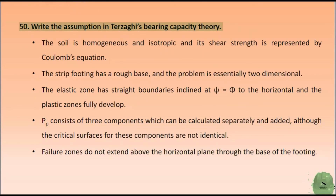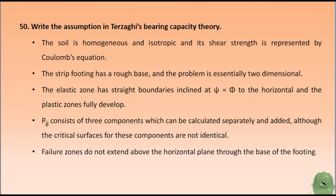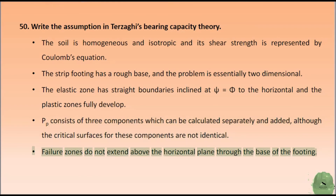Write the assumptions in Terzaghi's bearing capacity theory. The soil is homogeneous and isotropic and its shear strength is represented by Coulomb's equation. The strip footing has a rough base and the problem is essentially two-dimensional. The elastic zone has straight boundaries inclined at angle Φ to the horizontal and the plastic zones fully develop. The bearing capacity consists of three components which can be calculated separately and added, although the critical surfaces for these components are not identical. Failure zones do not extend above the horizontal plane through the base of the footing.